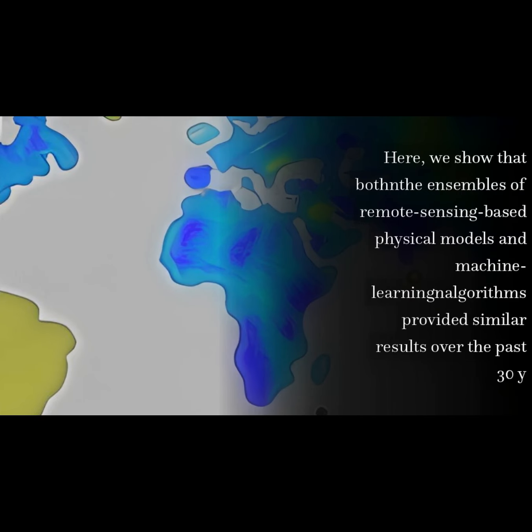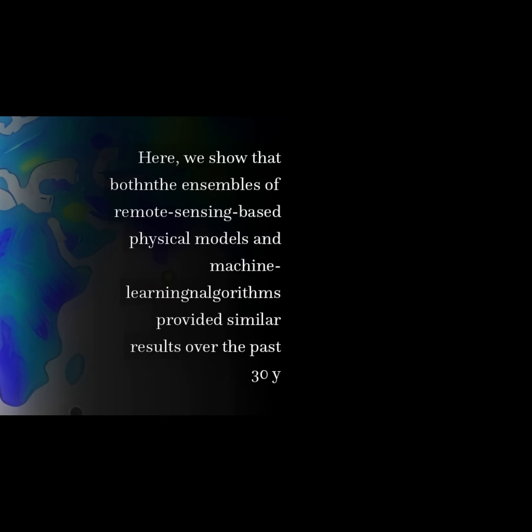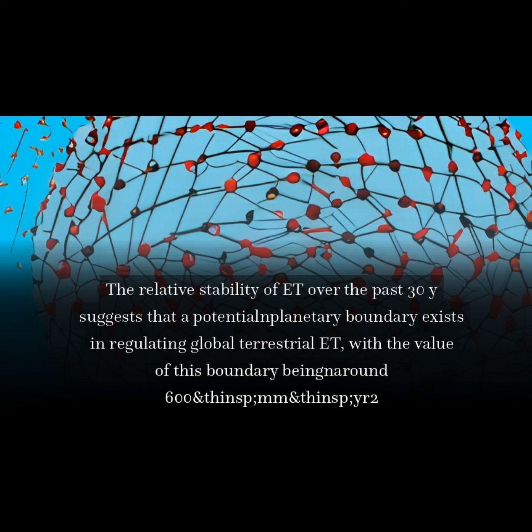Here, we show that both ensembles of remote sensing-based physical models and machine learning algorithms provided similar results over the past 30 years. The relative stability of ET over the past 30 years suggests that a potential planetary boundary exists in regulating global terrestrial ET, with the value of this boundary being around 600 mm/year.